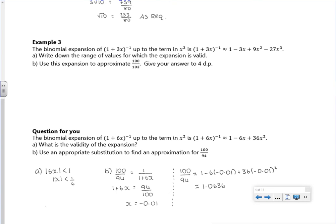Right, so this is the last example. The binomial expansion of (1 + 3x)^-1 up to the term in x^3 is given there. Write down the range of values for which the expansion is valid. So there's a 1, so that's good. I always have to have a 1 there.